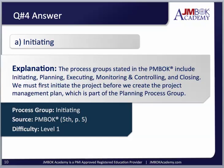The answer is initiating. There are five process groups: initiating, planning, executing, monitoring and controlling, and closing. We must initiate the project before we can plan it, so initiating is the only process group that precedes planning. This comes from the PMBOK 5th edition, page 5, difficulty level 1. If you know the process groups, this is straightforward. Also, page 61 of the PMBOK 5th edition shows the process groups on the X-axis and the 10 knowledge areas on the Y-axis — study all 47 processes.